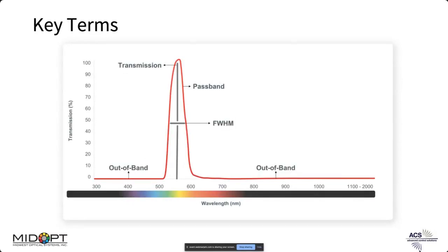Before I get into different types of optical filters, I want to go over a couple of key terms and describe what a transmission curve is. This curve accompanies every optical filter and presents a lot of data, letting you know how the filter is going to perform. The primary use of an optical filter is to control light — whether that's blocking certain wavelengths or passing others.